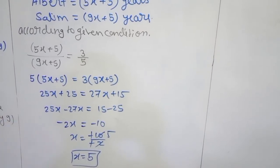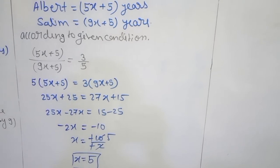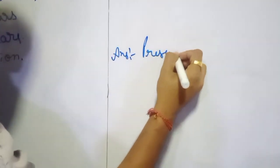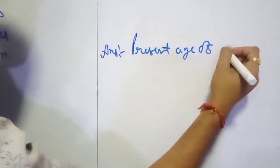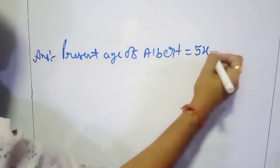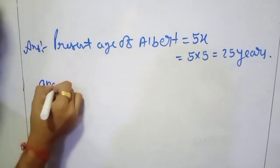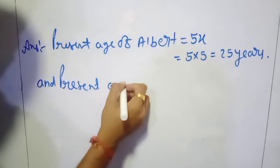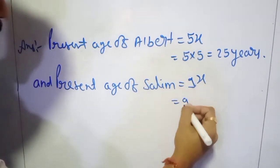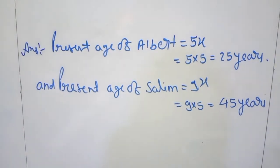Now we got the value of x as 5. They are asking for the present ages. The present age of Albert is 5x, which is 5 into 5, equal to 25 years. And the present age of Salim is 9x, which is 9 multiplied by 5, equal to 45 years. This way we conclude the answers.